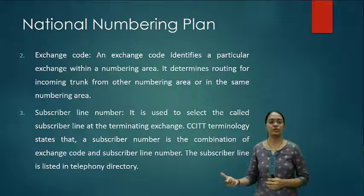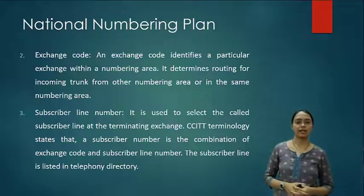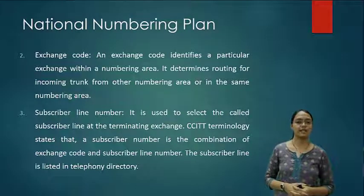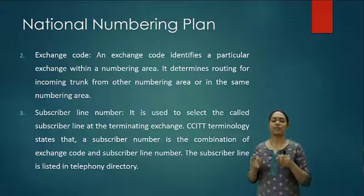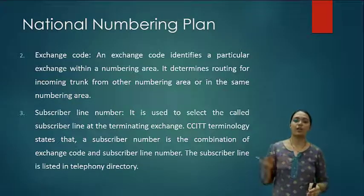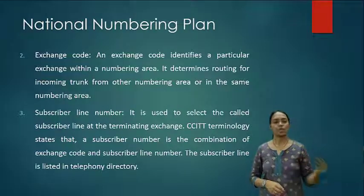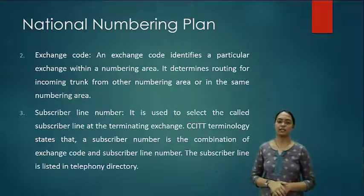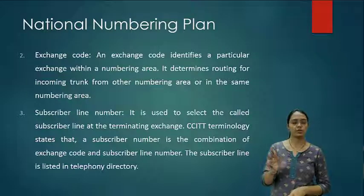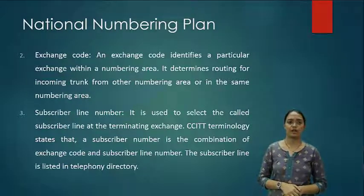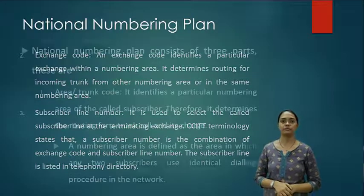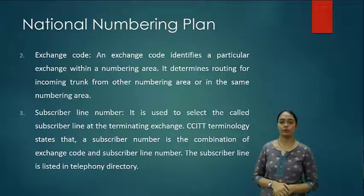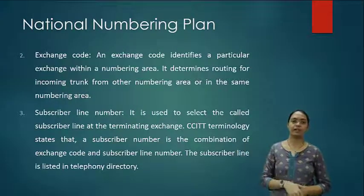The third part is subscriber line number, which is used to select the call subscriber line at the terminating exchange. CCITT terminology states that a subscriber number is the combination of exchange code and subscriber line number. The subscriber line is listed in the telephonic directory. These are the three different parts of the national numbering plan: area trunk code, exchange code, and subscriber line number.